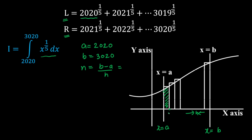The next data point will be a + h, then a + 2h, and so on. The number of strips will be 1000 divided by 1. The width of each rectangle is 1, because if you remove the fifth root, the difference between consecutive terms in the series is 1.